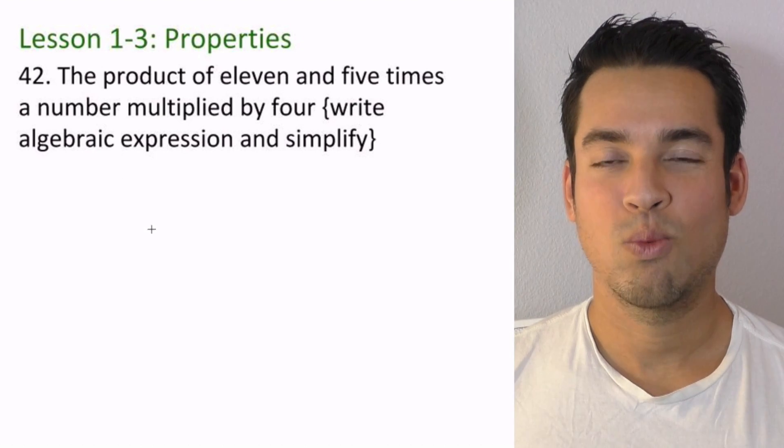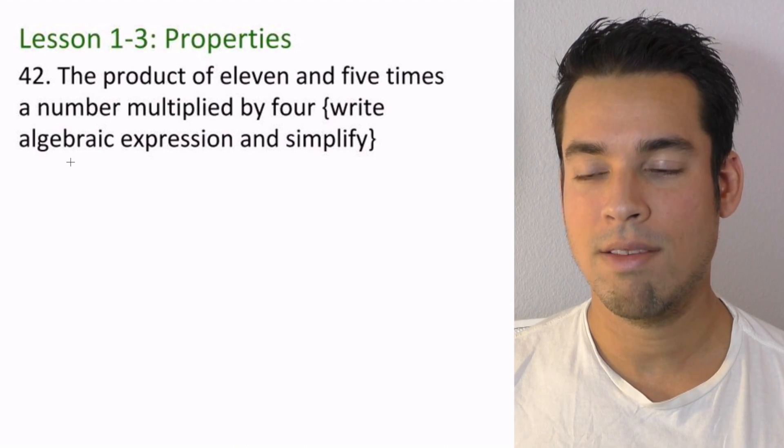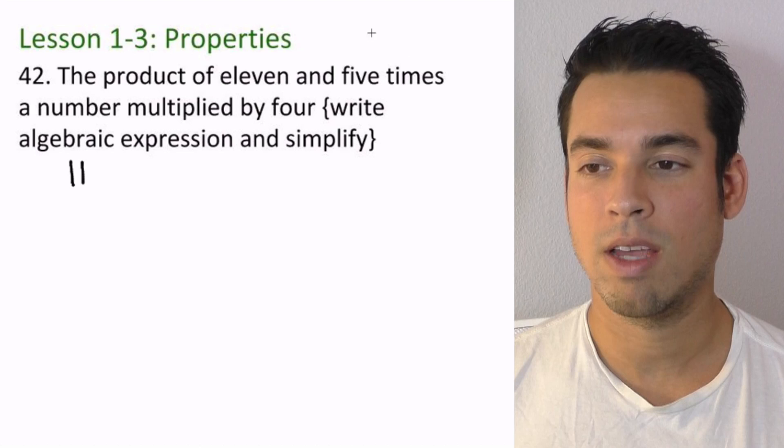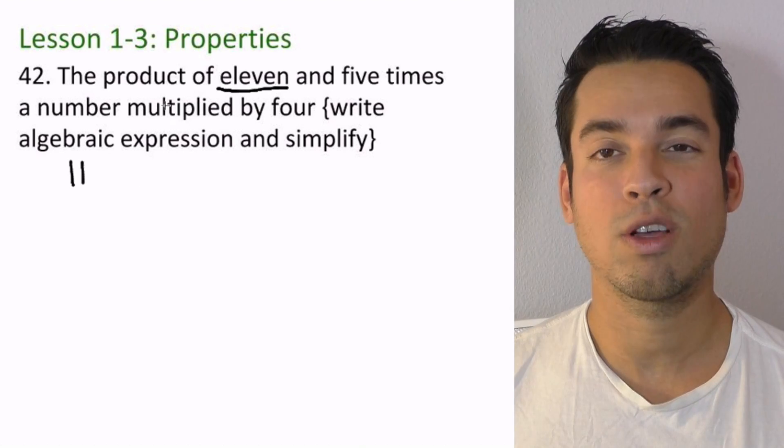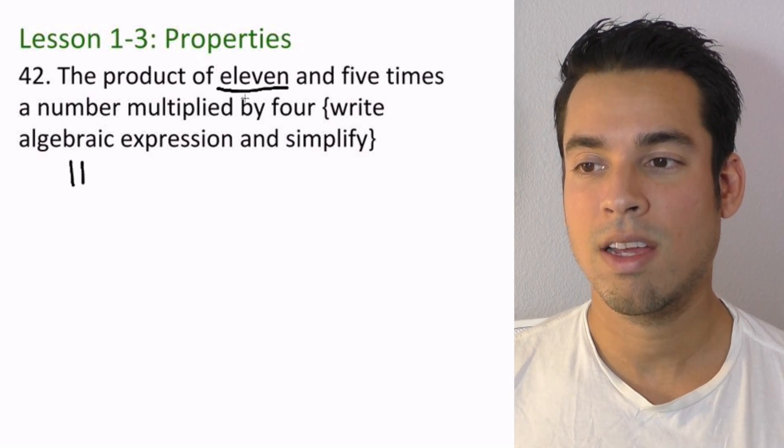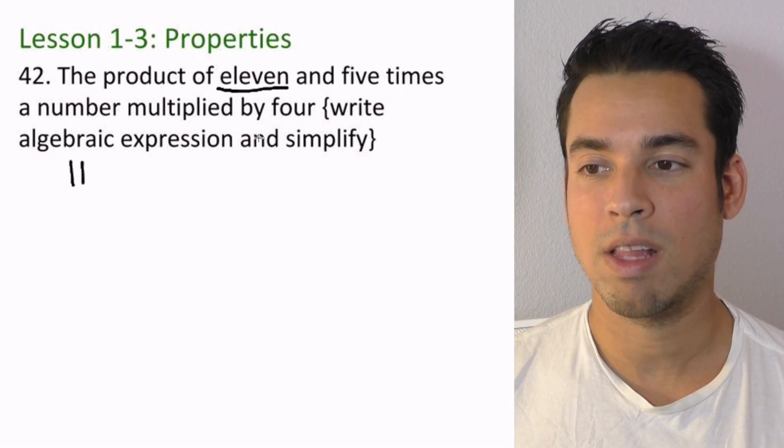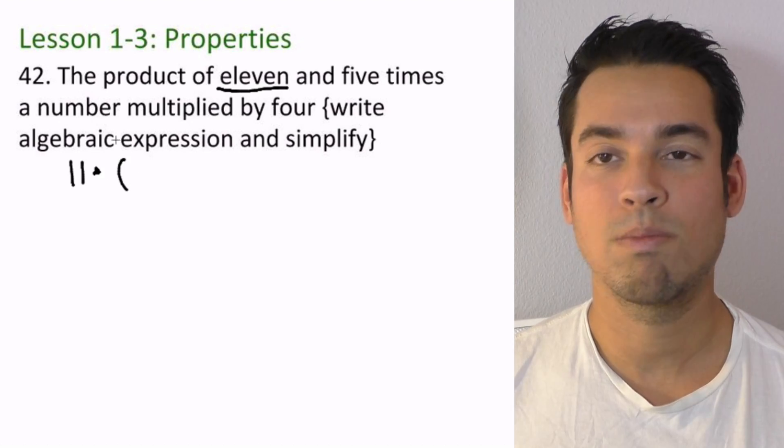Now again, we're converting words to expressions. The product of 11—I will start by writing stuff down, we can even underline this a little bit—of 11. So when we're talking about product, we're talking about multiplication. The product of 11 and 5 times a number, multiplied by 4. The product of 11 and—we're gonna put this in parentheses, this next part, because I know it's gonna be big—and 5 times a number.